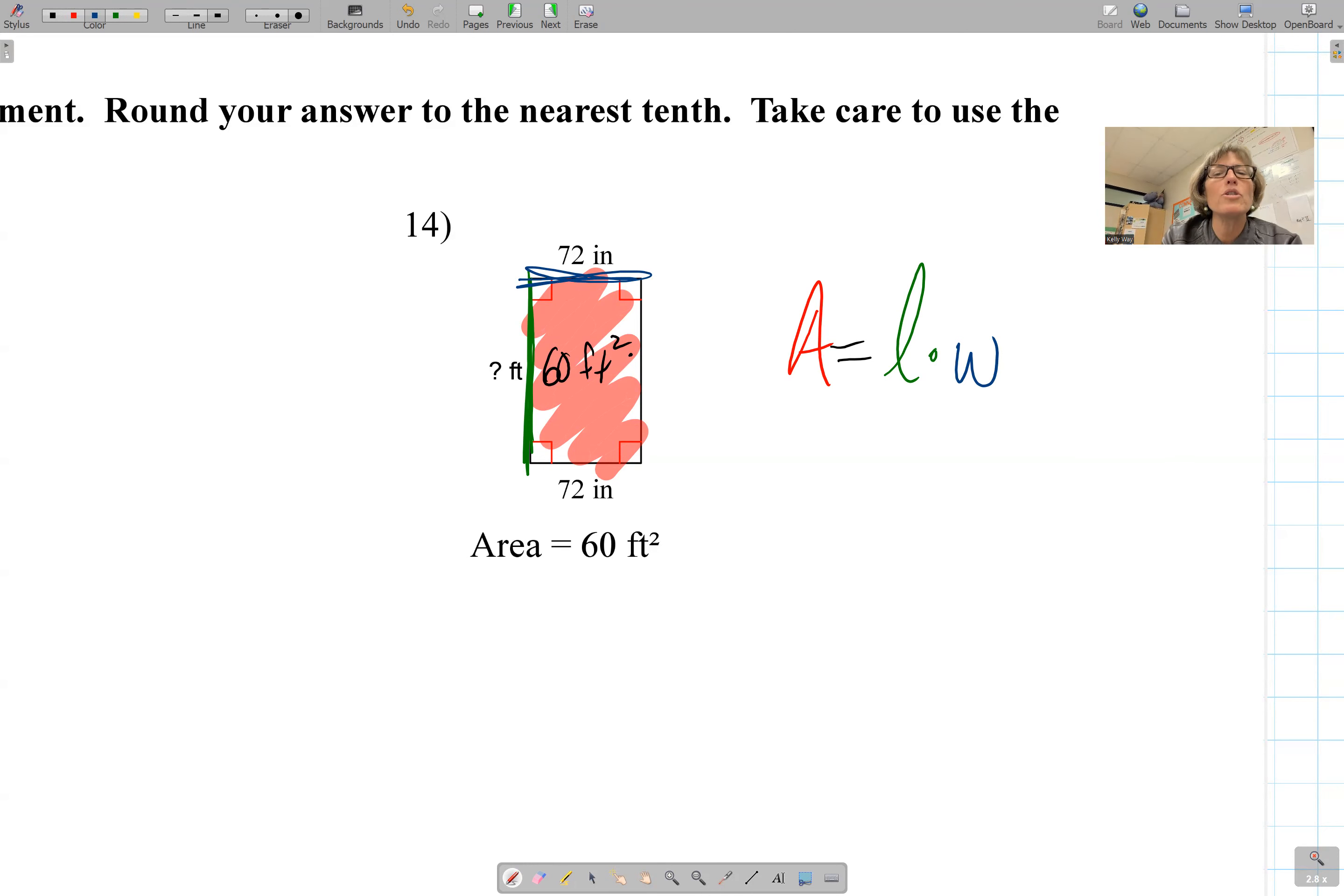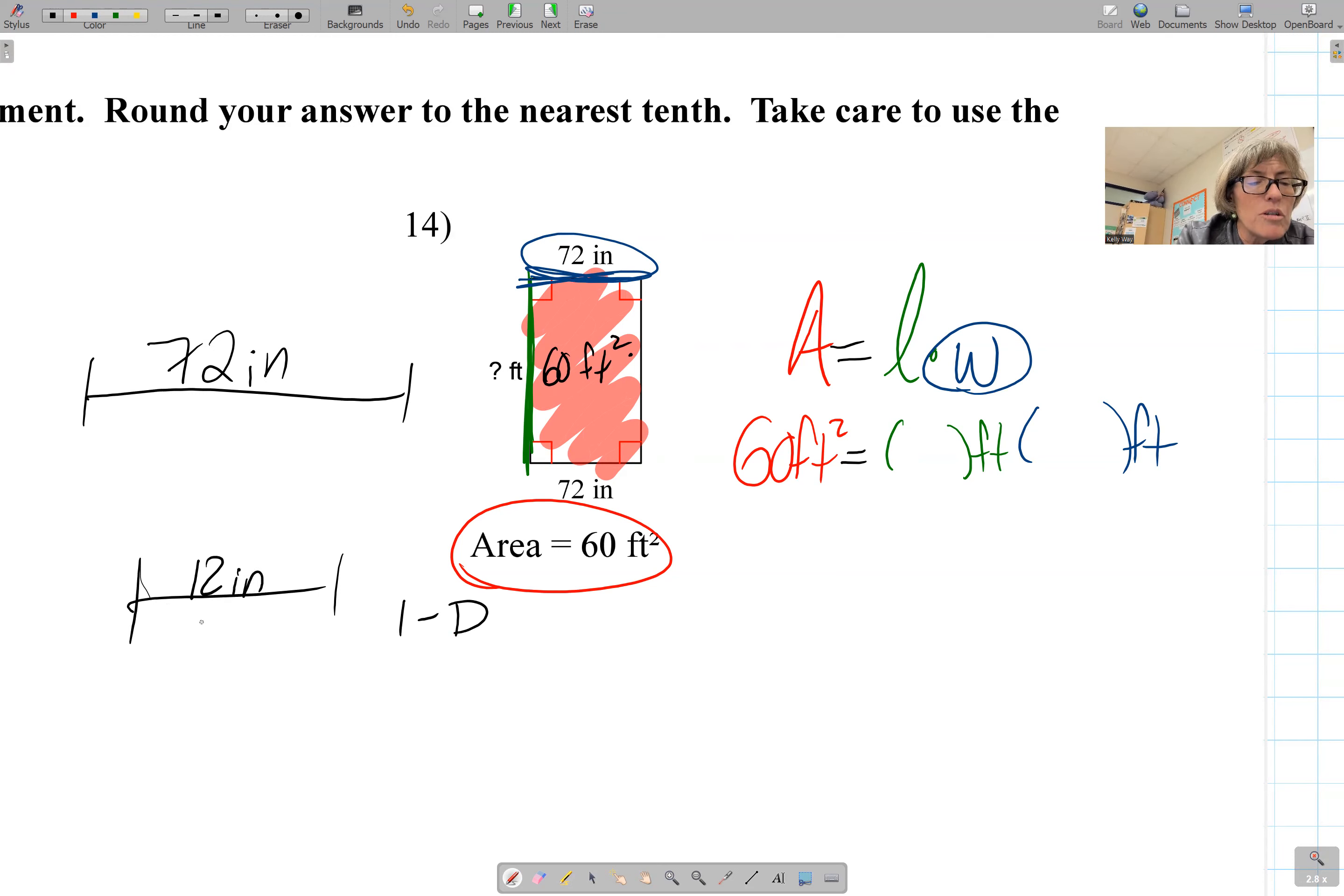Length times width. So once you have the equation, we're going to circle, plug, chug. Area is 60 ft² = our length is unknown feet times our width. Careful here. We have a discrepancy in units. Notice the area is in feet, the length is in feet, but the width is in inches. So before you can use this width, you need to get it into feet. So we know 72 inches. We know the conversion rate in the first dimension. 12 inches equals one foot.